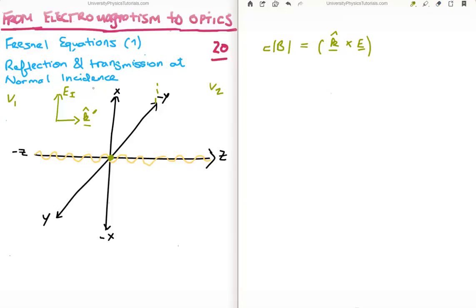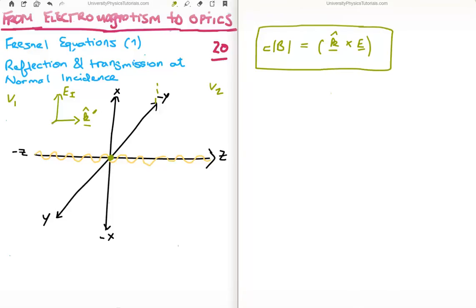Applying the right-hand rule to the cross product, knowing the electric field is polarized in the positive i-hat direction, we find the magnetic field comes out in the positive y direction. So this is B incident.